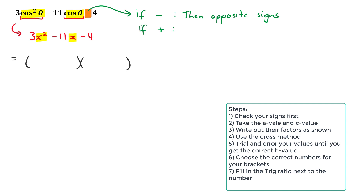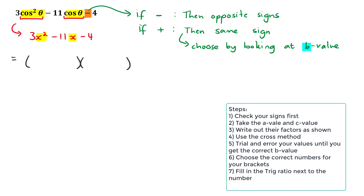If the last sign is positive, then the signs in the brackets are the same, and you choose which sign by looking at the b value from standard form ax² + bx + c. If b is positive, both brackets are positive; if b is negative, both are negative. In this case we have a negative last term, so we get one plus and one minus.